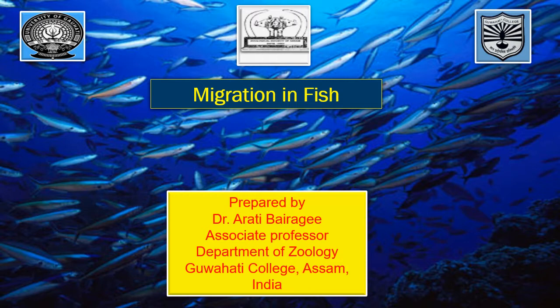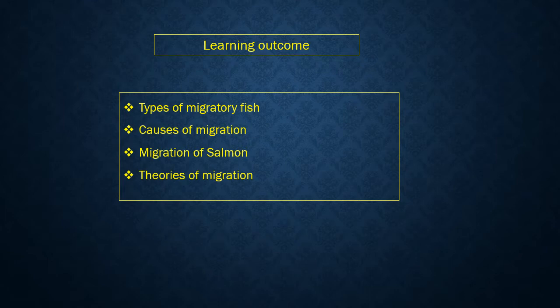Fish migration has been known since very early times, but its knowledge was restricted. Migration in fish is a mysterious event of nature which has not yet been solved completely. The presentation will mainly focus on the types of migratory fish, causes of migration, migration of salmon fish, and theories of migration.